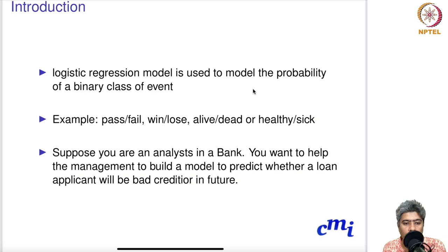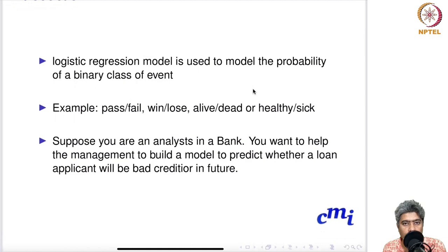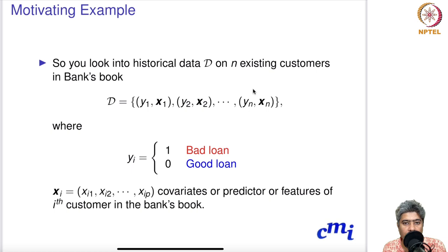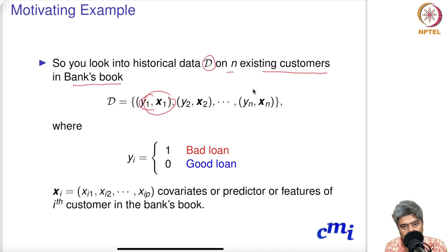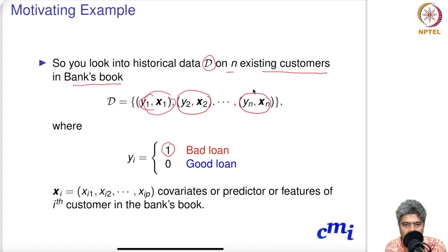Suppose you are an analyst in a bank and you want to help management build a model to predict whether a loan applicant will be a bad creditor in the future. You look into the historical data D of n existing customers. Each record (yi, xi) represents a customer, where yi equal to one means it was a bad loan — the customer did not return the money with interest on time — and zero means it was a good loan.